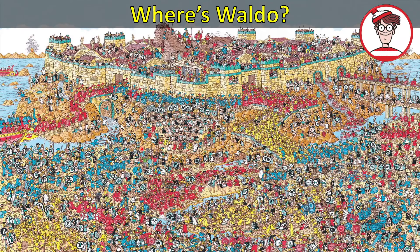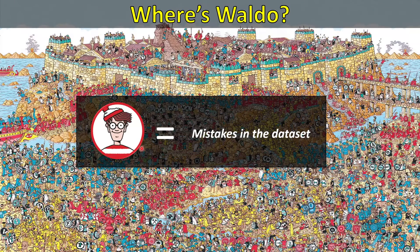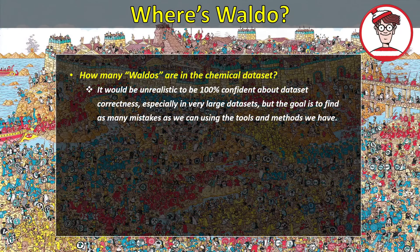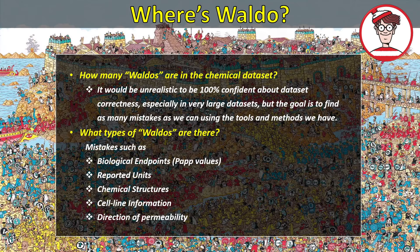Finding mistakes in chemical datasets can be very challenging — it can be like finding Waldo. As you can see in this picture, it can be very difficult to track down Waldo, and I'm using Waldo as a metaphor for mistakes in the dataset. Chemical datasets can be quite messy and chaotic. There are two major challenges as we try to find mistakes: the first is we don't know how many mistakes are out there, and we cannot be 100% confident about dataset correctness, especially if the dataset is large, but our goal is to find as many mistakes as we can using the tools and methods we have.